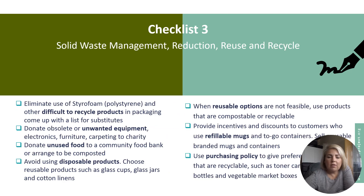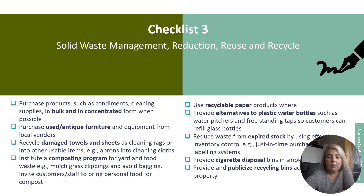Checklist three looks at solid waste management — reduce, reuse, recycle. How you can reduce, reuse and recycle products, for example in packaging, unwanted equipment, unused food and disposable products, and look at reusable options, perhaps creating a circular economy business. For example, you might consider refillable mugs instead of paper mugs to reduce waste, and review your purchasing policy — for example, working with suppliers who only provide environmentally friendly packaging and products.